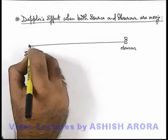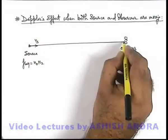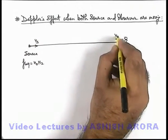And if both are considered to be moving, say source is moving with the speed vs and observer is moving with the speed vo.